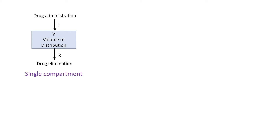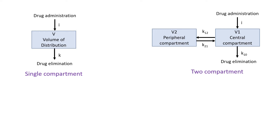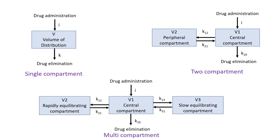Then there is a two compartment model where the body is divided into central and peripheral compartments. Finally, the multi-compartment model assumes that there are more than two compartments, i.e. central, rapidly equilibrating and slowly equilibrating peripheral compartments. We will look into them one by one.